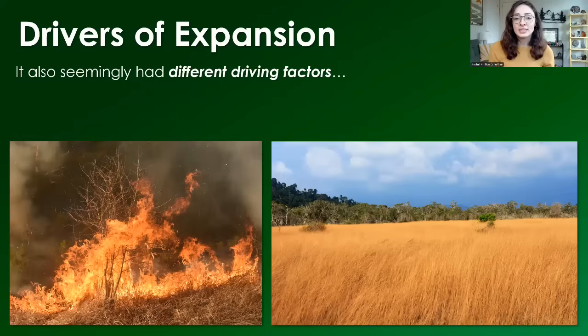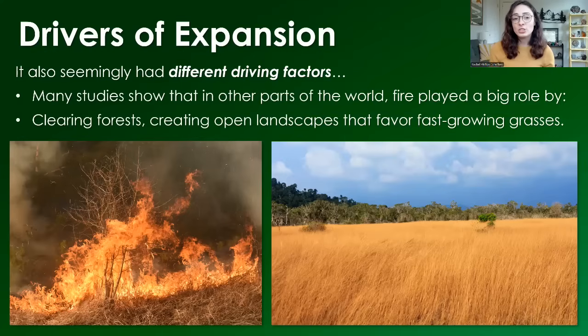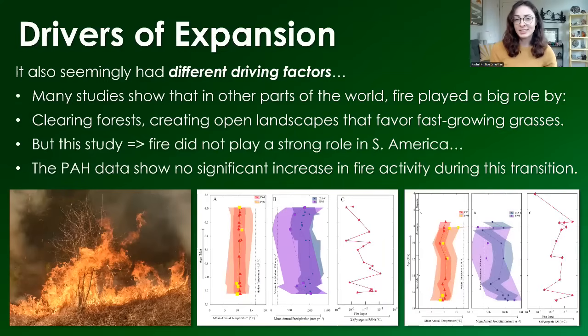They also found that the maximum C4 vegetation in this region at the time only reached up to around 15%, which is less than previous studies have suggested. In addition, the spread of grasslands in South America — specifically in Argentina — seemingly had different drivers than elsewhere in the world. Many studies show that in other parts of the world, fire played a big role by clearing forests and creating open landscapes that favored fast-growing grasses. But this study implies that fire did not play a significant role here. The PAH data showed no significant increase in fire activity in this region during this transition.